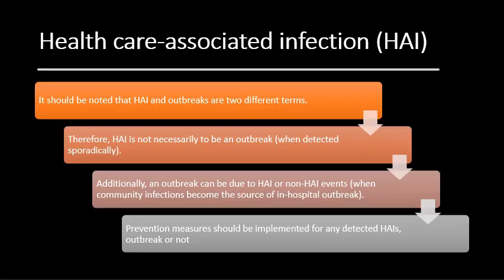It should be noted that healthcare-associated infection and outbreak are two different terms. HAI is not necessarily an outbreak when detected. Additionally, an outbreak can be due to hospital-acquired or non-hospital-acquired infection. When a community infection becomes the source of a hospital outbreak, prevention measures should be implemented directly for any detected hospital-acquired infection, whether an outbreak or not.